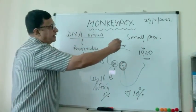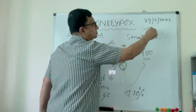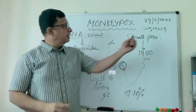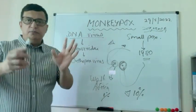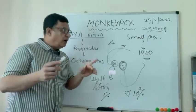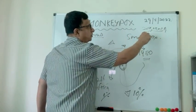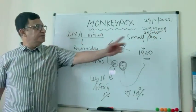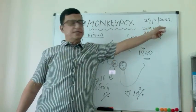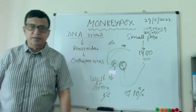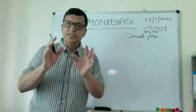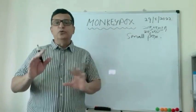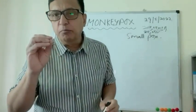The monkeypox virus genome contains about 200,000 base units. To compare, the COVID virus genome has about 30,000 base units, so monkeypox is quite a large virus relative to SARS-CoV-2. This virus was first identified in Copenhagen, Denmark, in a group of crab-eating macaque monkeys used for laboratory purposes.